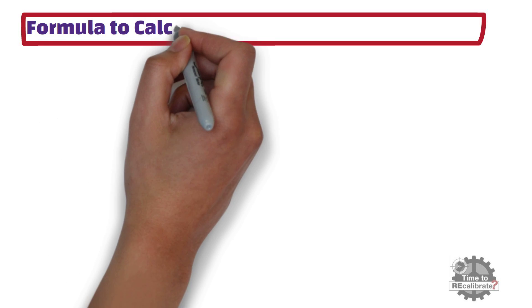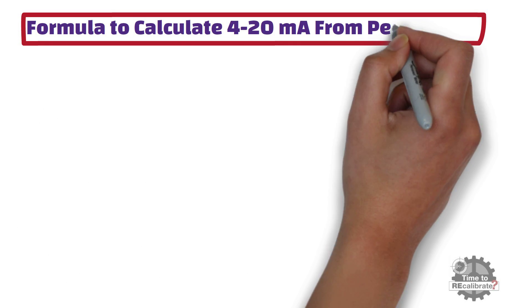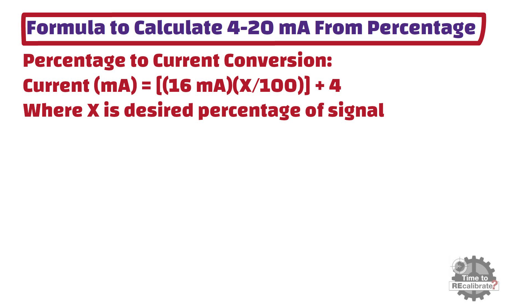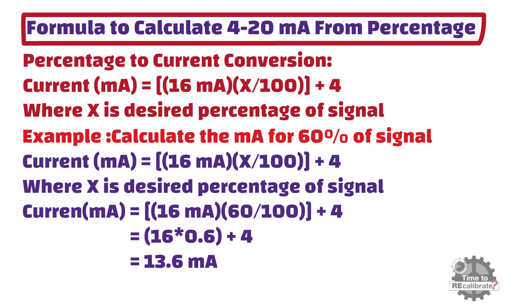In this section, we will learn about the standard formula to calculate 4 to 20 milliampere from percentage. As you can see, this is a standard formula to convert any percentage process value into a milliampere value. Let's understand this formula by taking one example: calculate the milliampere for 60% of signal. Put 60% in place of x in this equation and do the simple math calculation. You will get 13.6 milliampere.